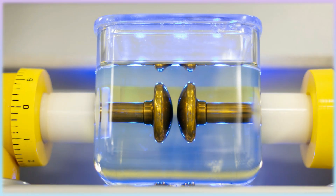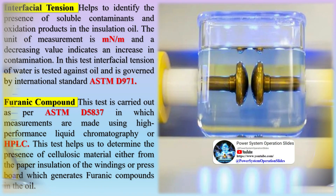Interfacial tension: this test helps to identify the presence of soluble contaminants and oxidation products in the insulation oil. The unit of measurement is mN/m, and a decreasing value indicates an increase in contamination. Interfacial tension of water is tested against oil and is governed by international standard ASTM D971.